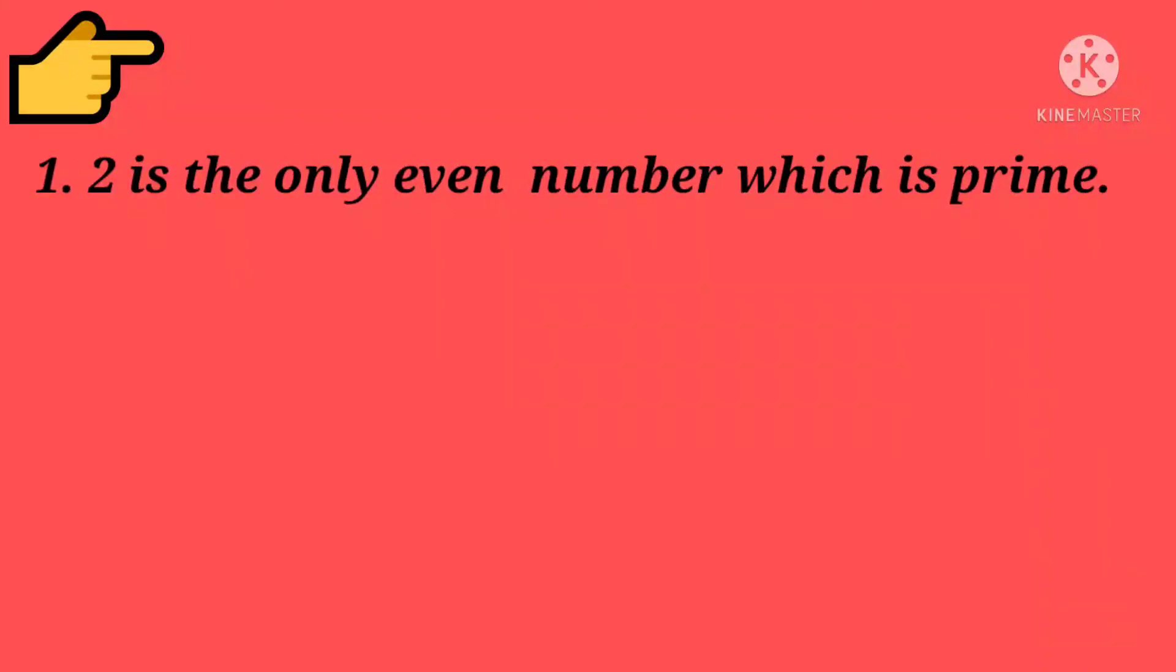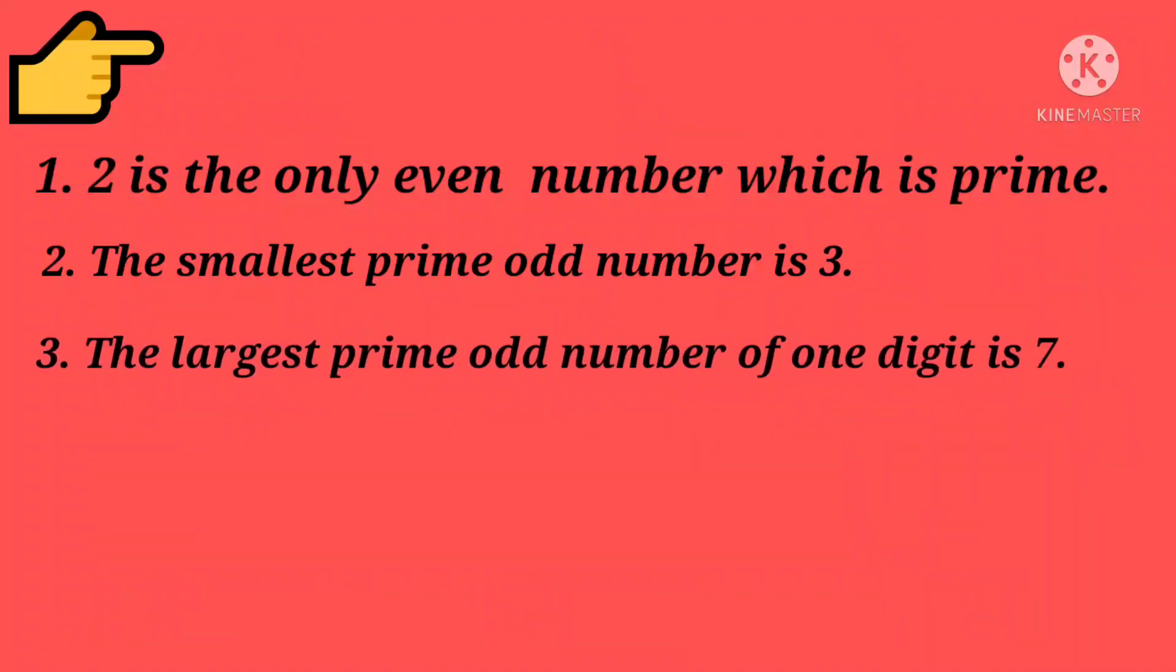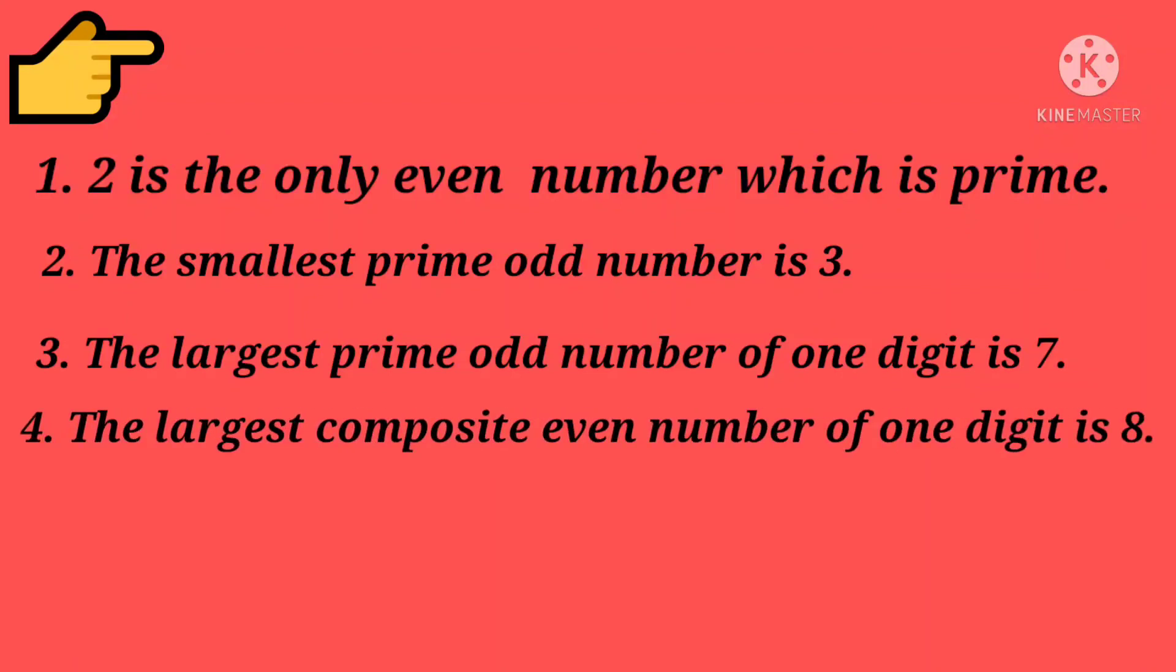Some facts to remember are first, 2 is the only even number which is prime. Second, the smallest prime odd number is 3. The largest prime odd number of 1 digit is 7.